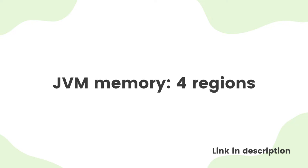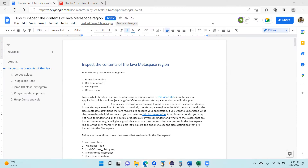The JVM memory has four primary regions: the young generation, old generation, metaspace, and others. In this talk, I'm not going to be talking about what goes into each region — I will give you a link to a separate video clip on that. What I want to focus on here is how we can go about inspecting the contents in the metaspace region.